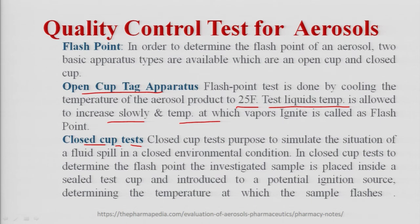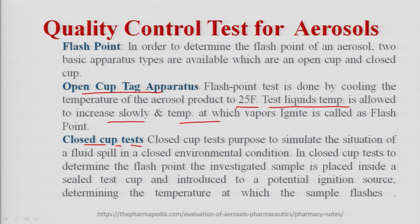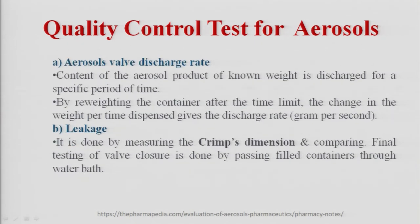In the closed cup apparatus, we close the cup with a lid rather than leaving it open. The closed cup apparatus simulates the situation of fluid filled in a closed environmental condition. In the closed cup test, the sample is placed inside a sealed test cup and introduced to a potential ignition source. The closed environment simulates the same environment in which the propellant is incorporated. The temperature at which vapors ignite gives us the flash point of that particular propellant.